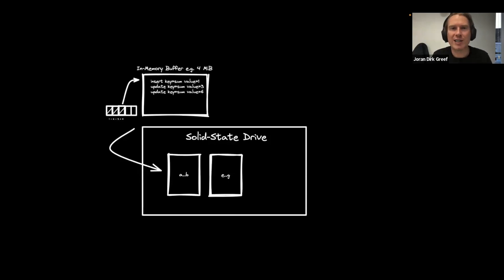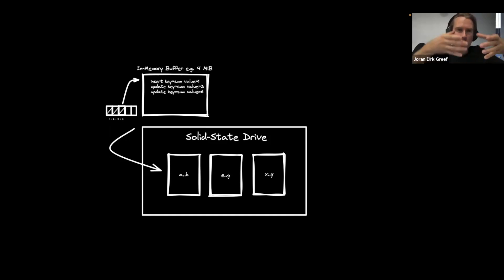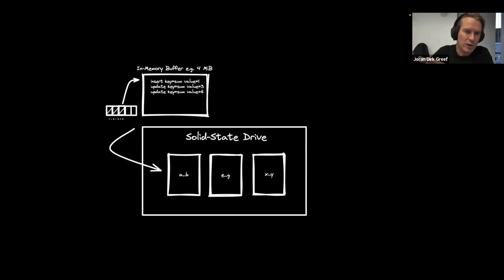When the log needs to wrap, all we need to do is write out a manifest — just a list of the tables on disk. When you want to checkpoint and let your log wrap around — since your log is just a circular buffer on disk — all you do is write out a manifest of the tables you've dumped to disk. Then you can replay the log from there at startup.